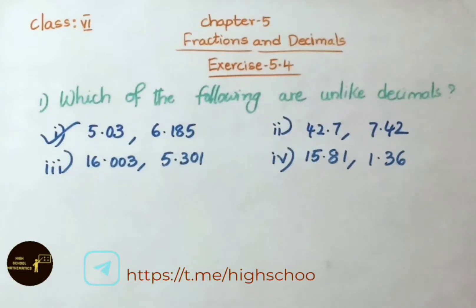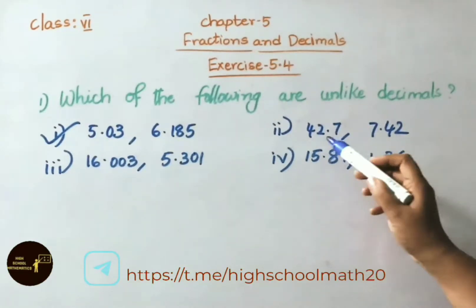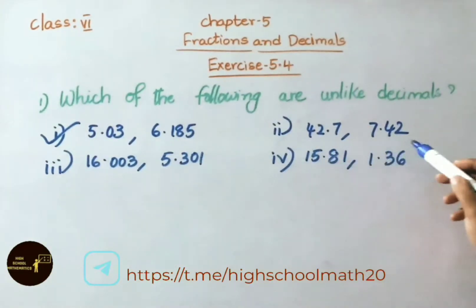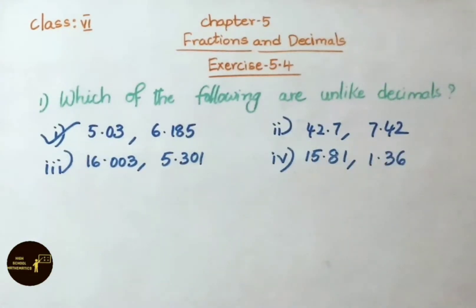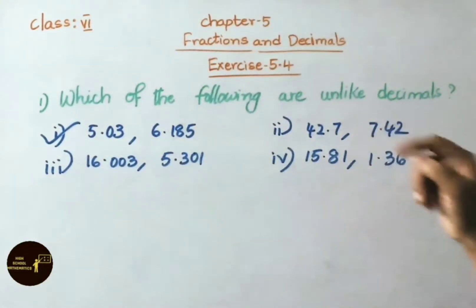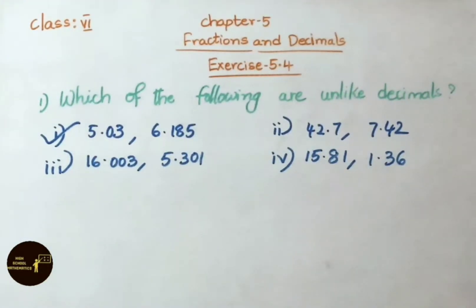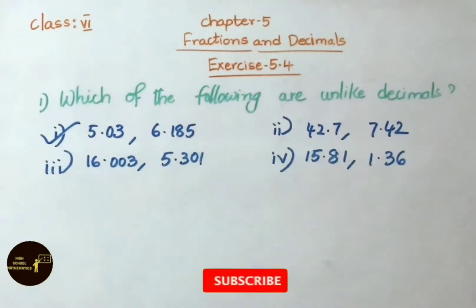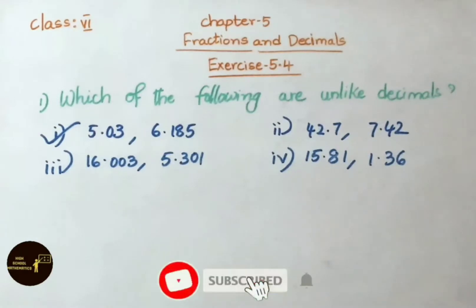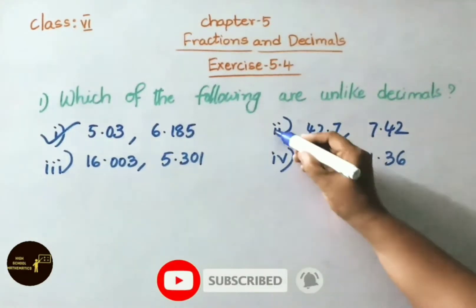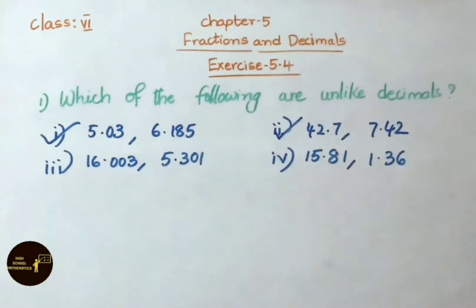See the second sum: 42.7 and 7.42. The first number has 1 decimal place and the second number has 2 decimal places. They have different decimal places, so these are also unlike decimals.